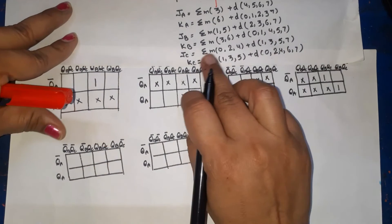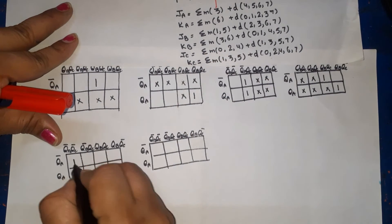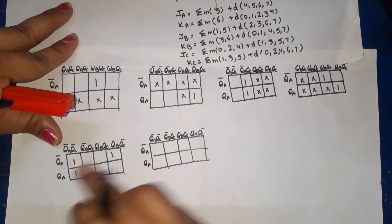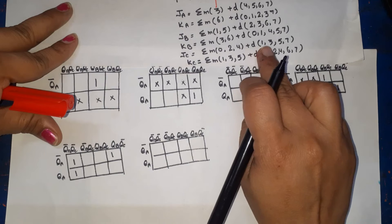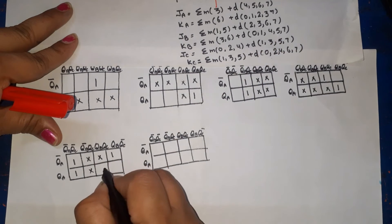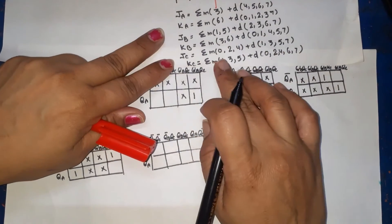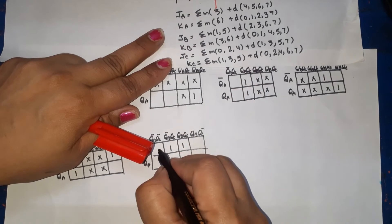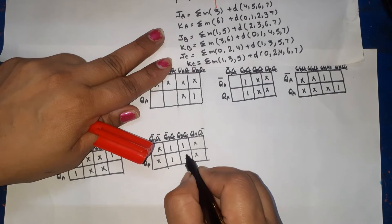For JC, minterms 0, 2, and 4 are 1, don't cares at 1, 3, 5, 7. For KC, minterms 1, 3, and 5 are 1, don't cares at 0, 2, 4, 6, 7. All values have been plotted.